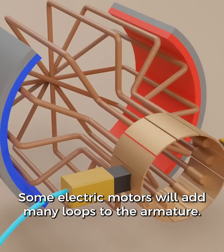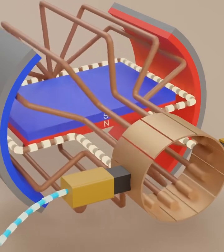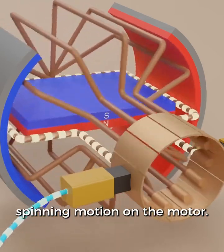Some electric motors will add many loops to the armature. This ensures that there will be a continuous spinning motion on the motor.